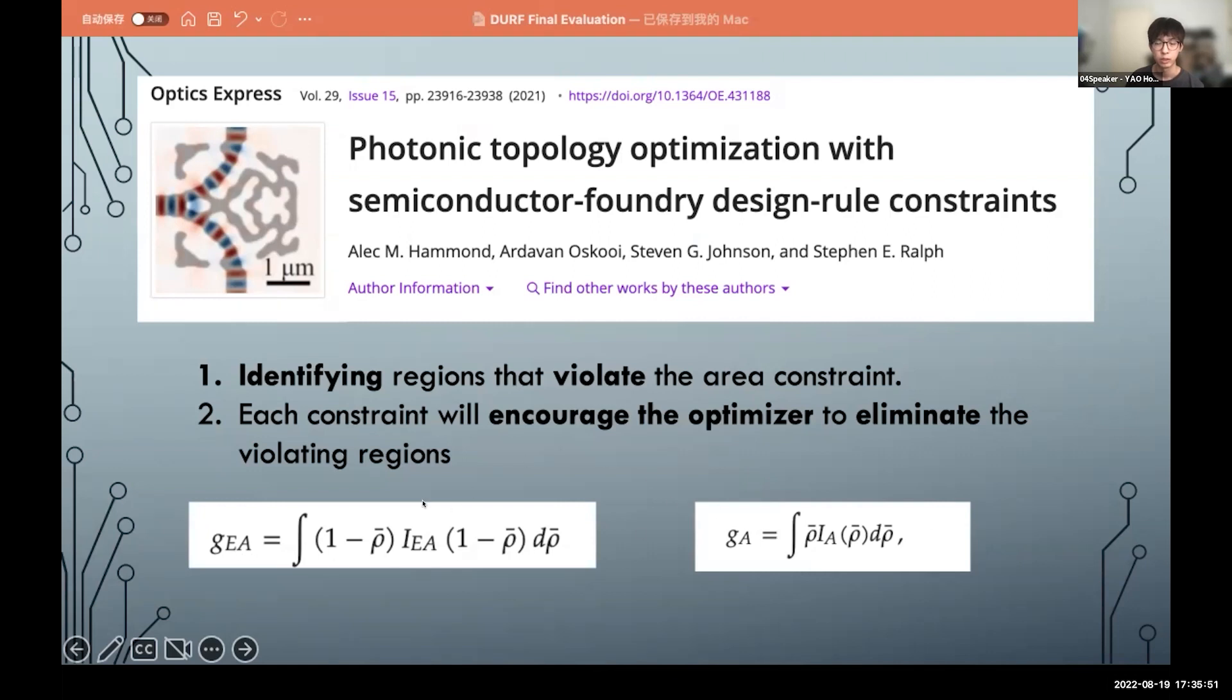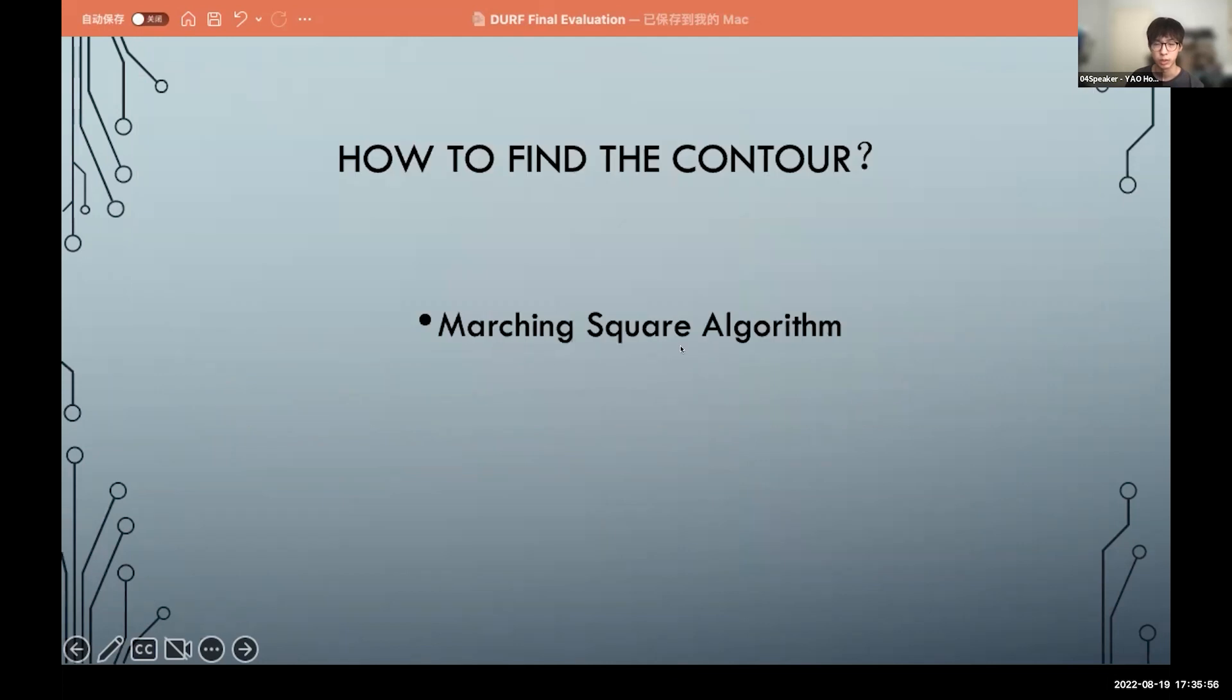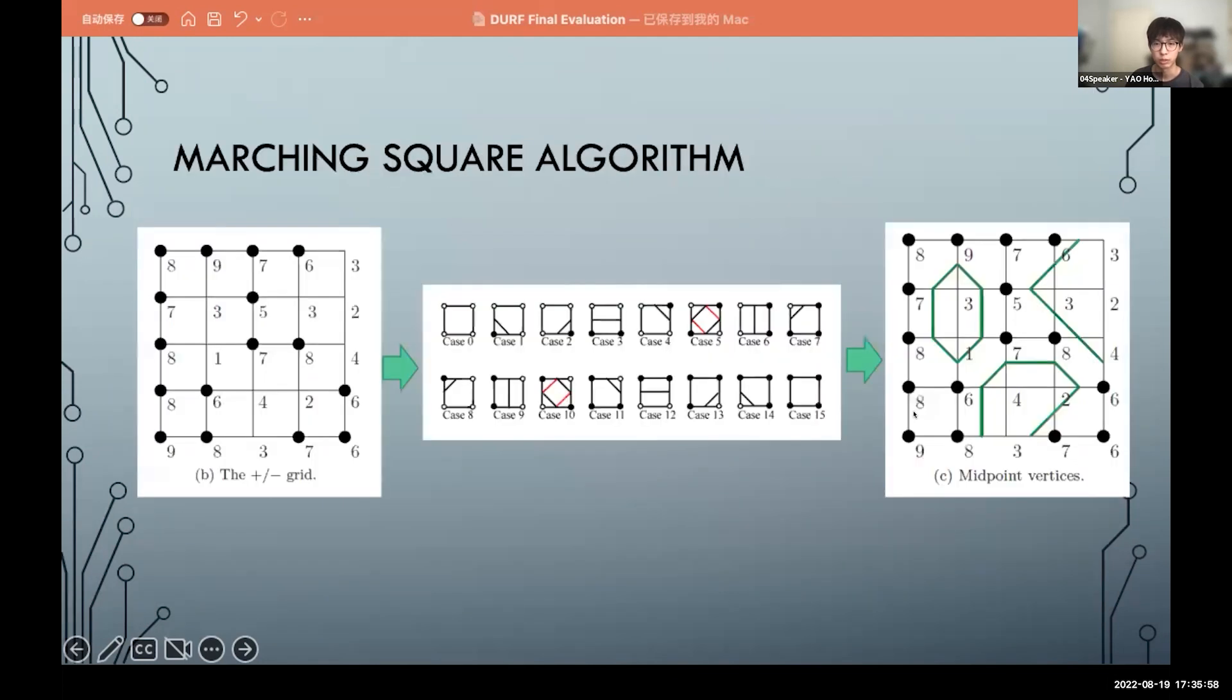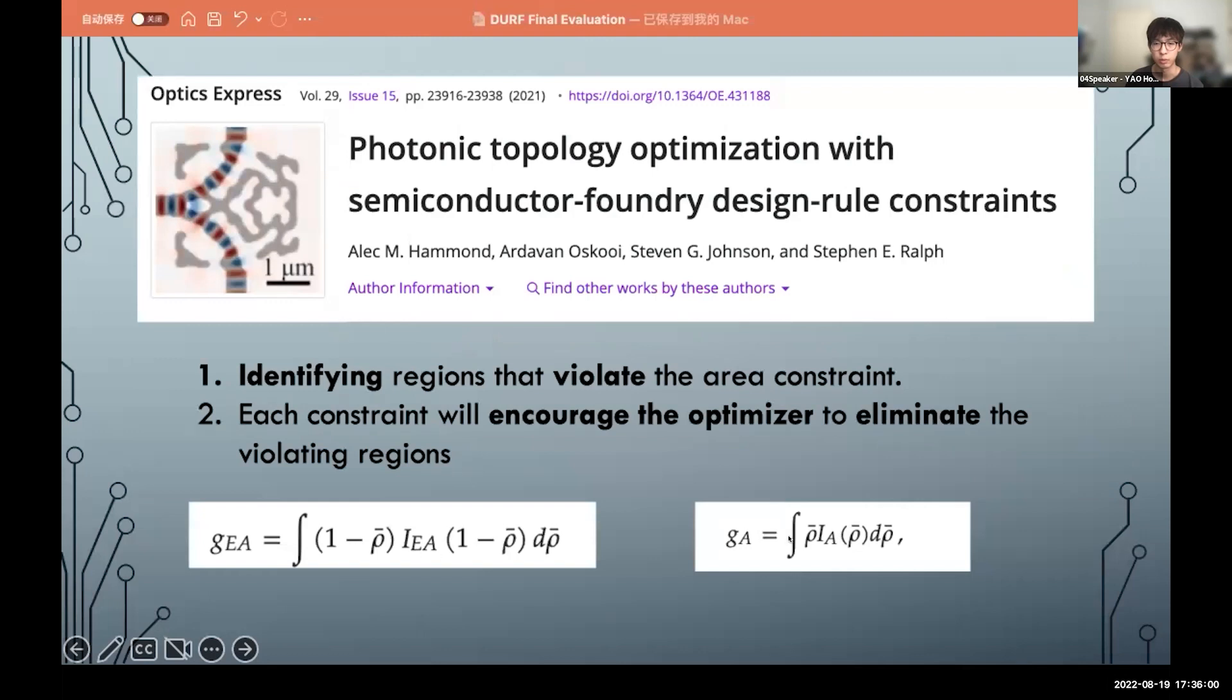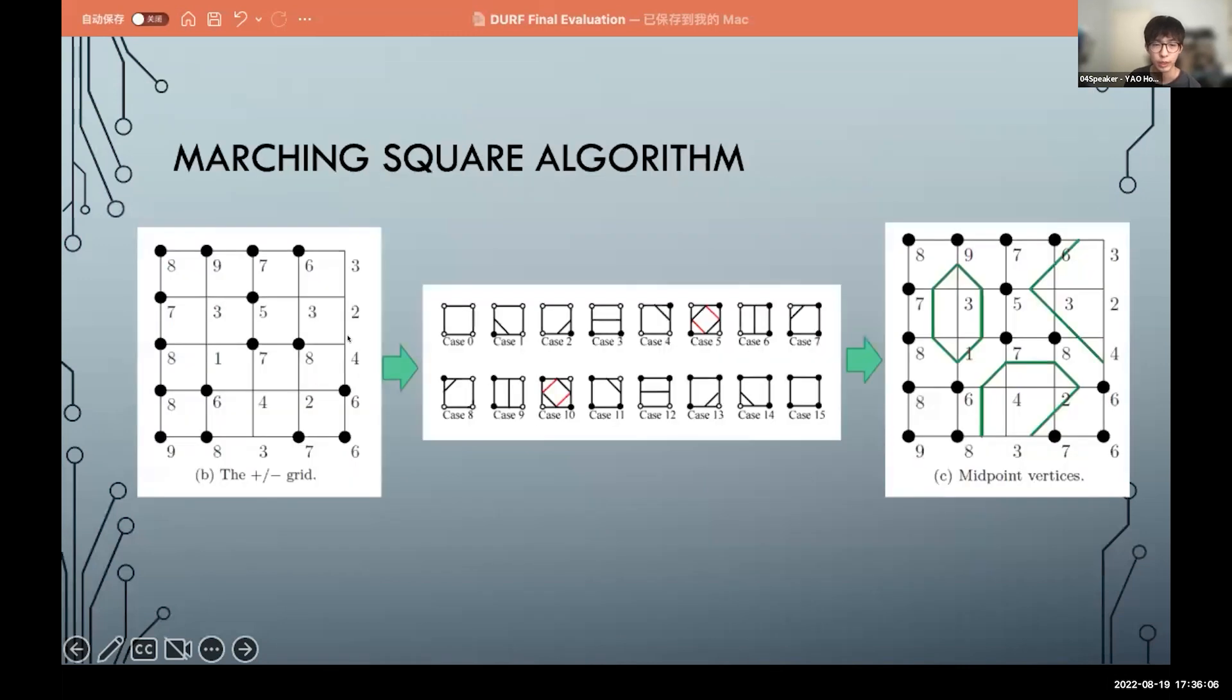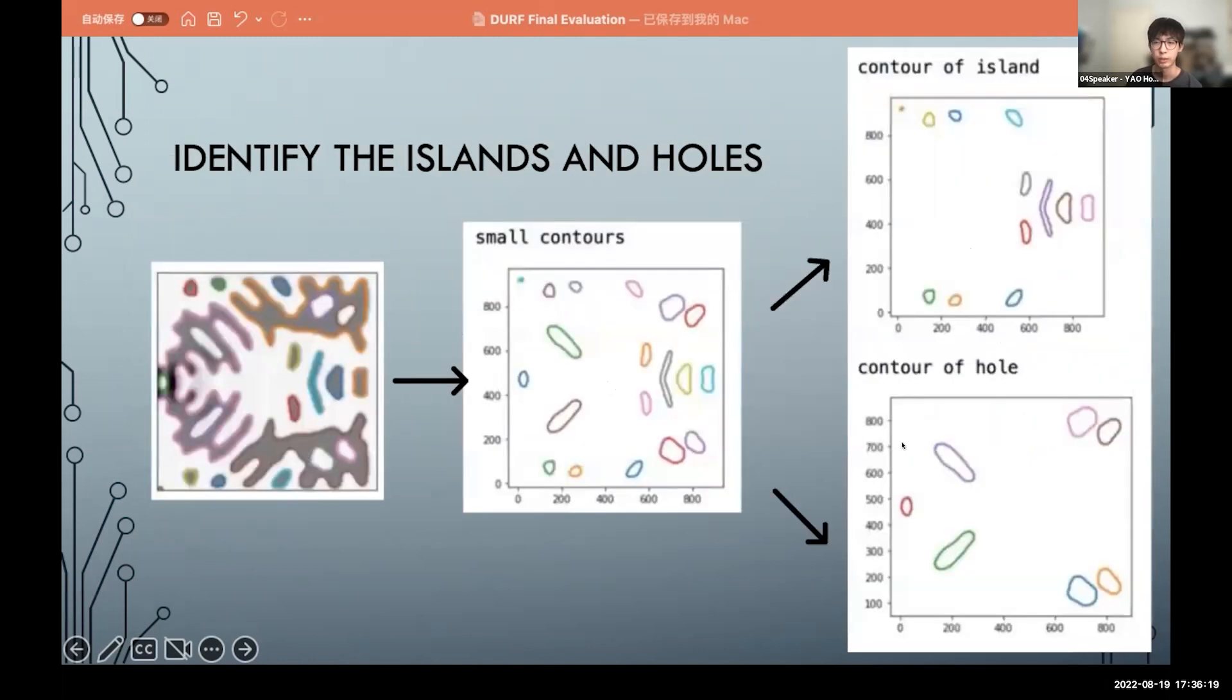And we use this method, following this paper, by calculating these two parameters to tell the optimizer to eliminate these two regions. And we use the marching squares algorithm to find the contour, because these two parameters are the contour of the islands and holes. So here we use the marching squares algorithm using this formulation to convert this contour to this field to get the contour.